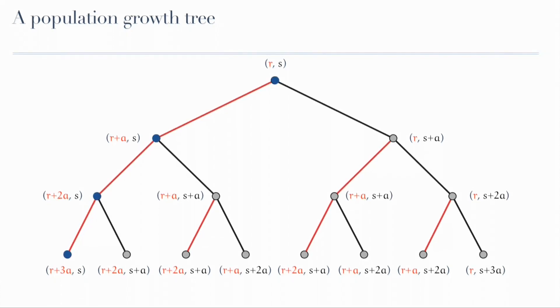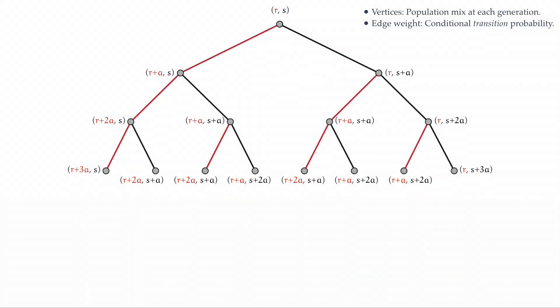Now let's build this forward. So here is our population growth tree. On the vertices, I'm going to put down the population distributions at each step, depending upon the history of transitions. On the edges, I'm going to put weights, and these weights are going to represent conditional probabilities, and in a very natural sense in this problem, forward conditional probabilities or transition probabilities.